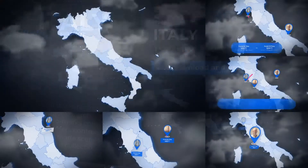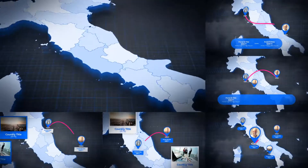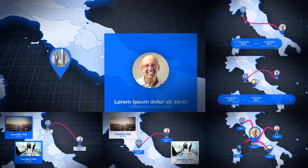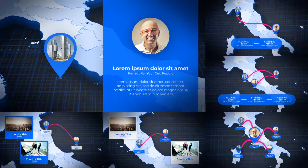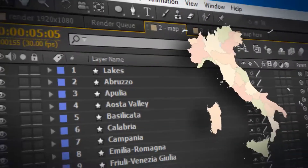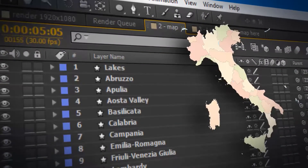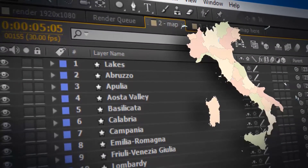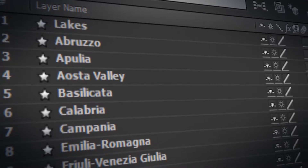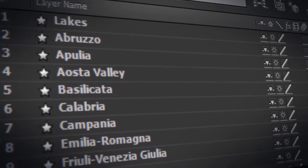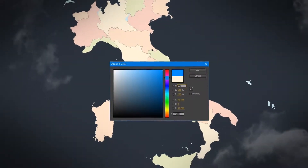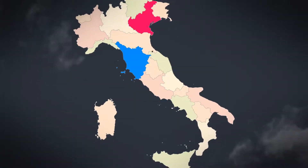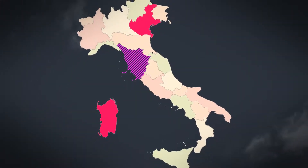Hi, this is the Italy Map Kit. It will add to your video a stylish animation of an Italian Republic map for every taste. The project contains absolutely all divisions of Italy. In addition, each division is configured individually.